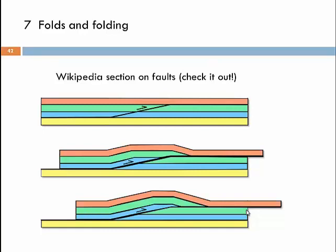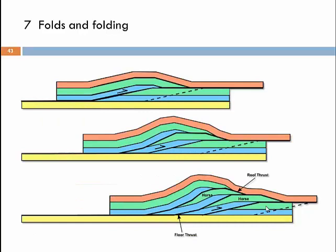A Wikipedia entry on faults also illustrates duplex structure development in sequential sketches, showing how it develops further with more and more ramps developing once others get locked. One ramp is active at one stage, becomes inactive, and a new one develops. Horses are piled one on top of the other, all overlaid by a roof thrust — that is a duplex structure.